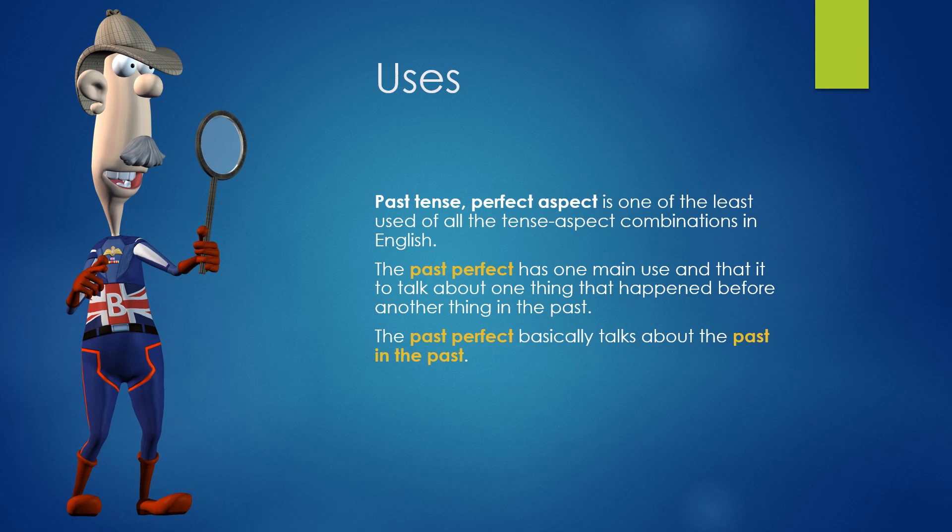Uses. Past tense perfect aspect is one of the least used of all the tense aspect combinations in English. The past perfect has one main use, and that is to talk about one thing that happened before another thing in the past. The past perfect basically talks about the past in the past.